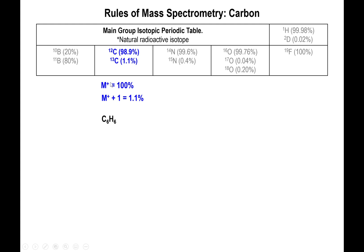When you look at the mass spectrum, not only will you have the base mass — which is the predominant signal — but one mass higher than that, M+1, will also be shown with a much lesser value of roughly 1.1%.